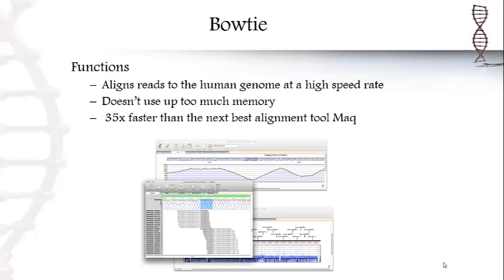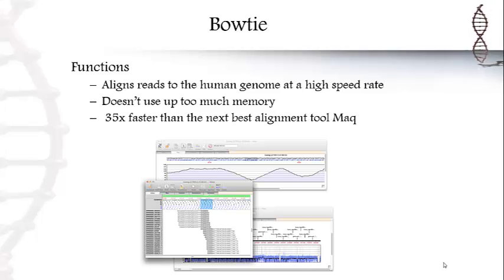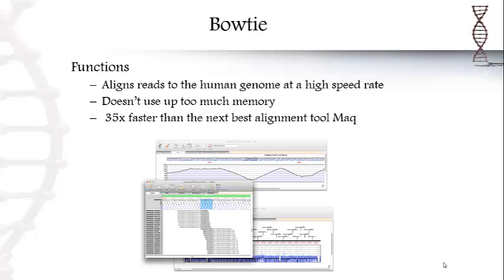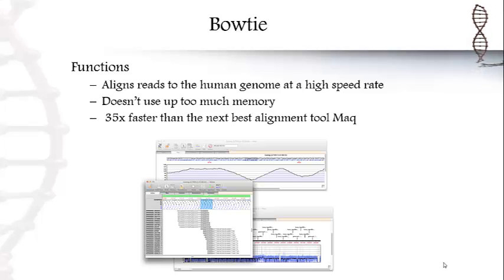There are two versions of Bowtie: the regular Bowtie and Bowtie 2. The difference is that Bowtie can only handle a limited number of insertions and deletions, whereas Bowtie 2 can handle any number of insertions and deletions and long reads as well.